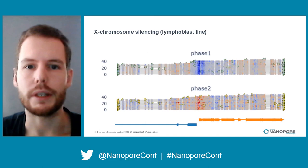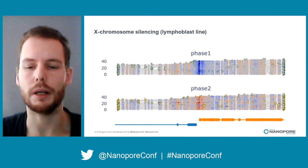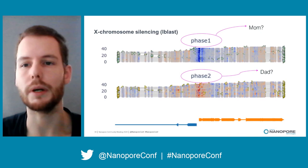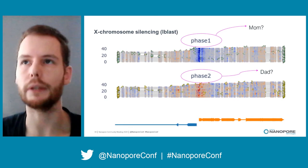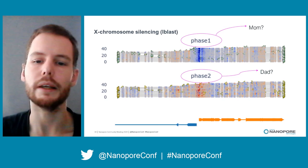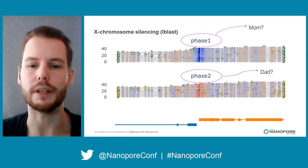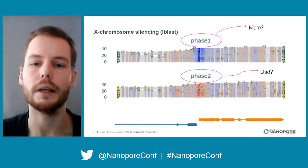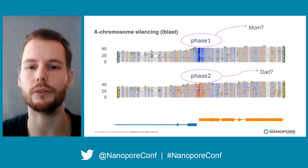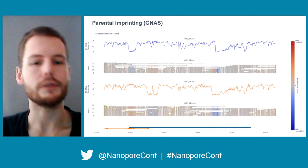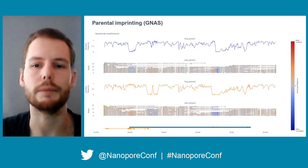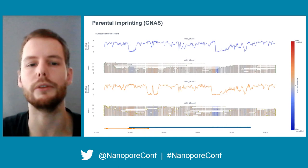Looking at this for X chromosome silencing is also very interesting. This is a lymphoblast cell line in which all cells have the same chromosome silenced and the same chromosome active — we can think of these as the maternally and paternally inherited chromosomes. This shows us that for one chromosome, the promoter regions of these genes are highly methylated and thus inactive — this is the inactive X chromosome — while the other shows a highly active X chromosome for these promoter regions, and we can just reveal this from the data itself.